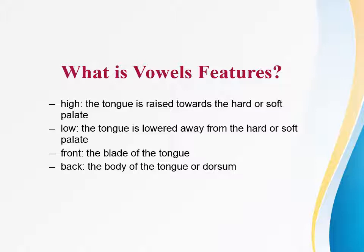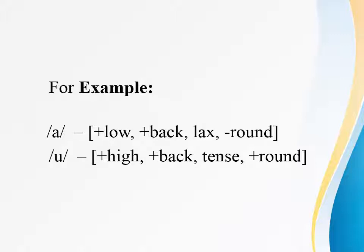High means the tongue is raised towards the hard or soft palate. Low means the tongue is lowered away from the hard or soft palate. Front refers to the blade of the tongue, and back refers to the body of the tongue or dorsum. For example, the vowel /ʌ/ is plus low, plus back, lax, and minus round, while /u/ is plus high, plus back, tense, and plus round.